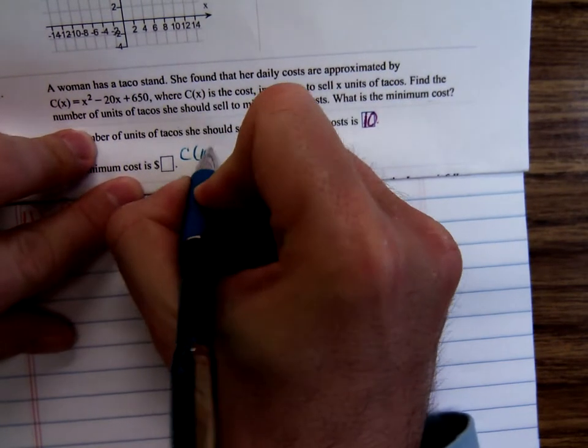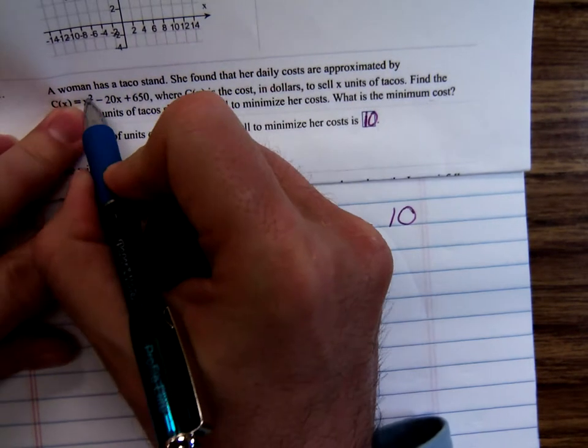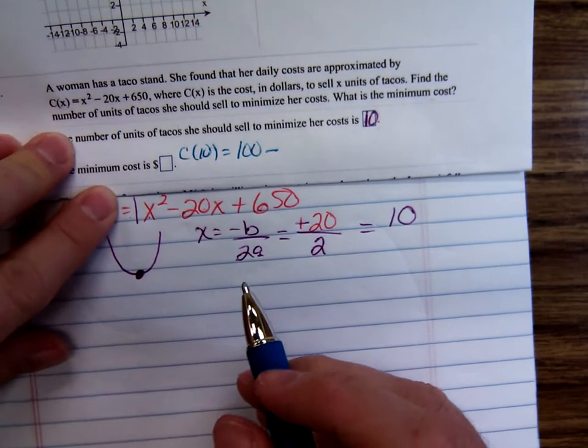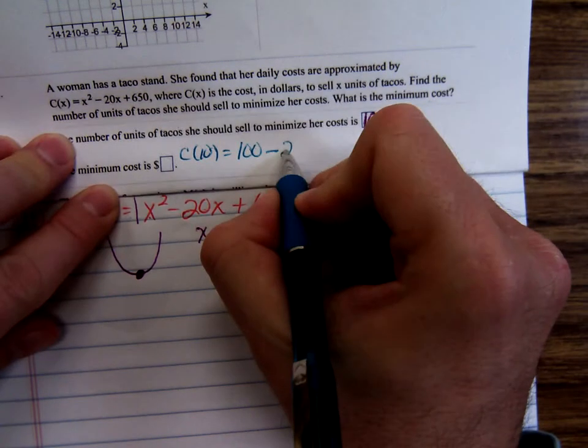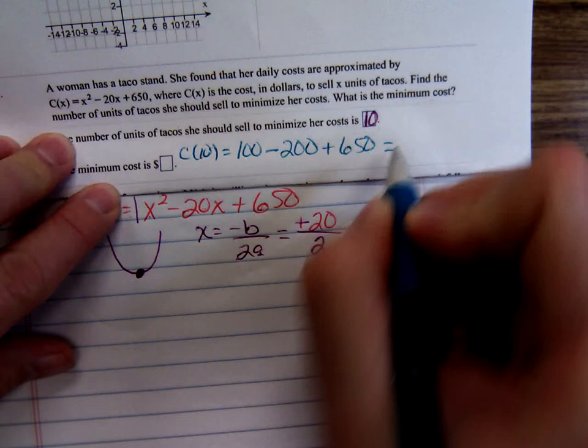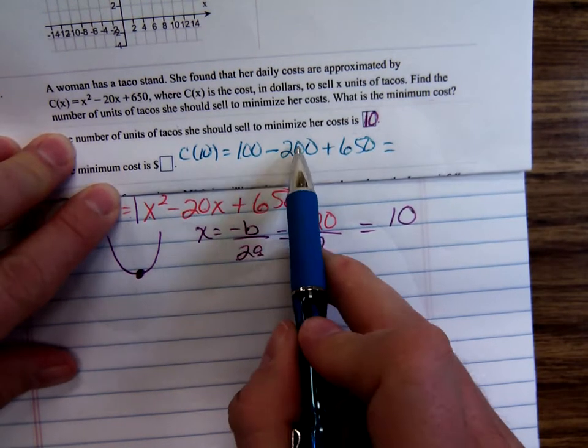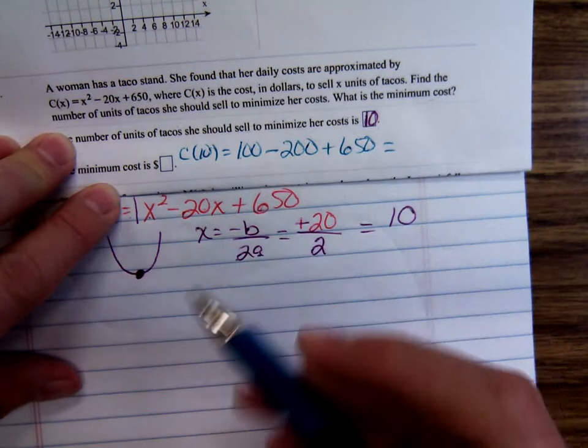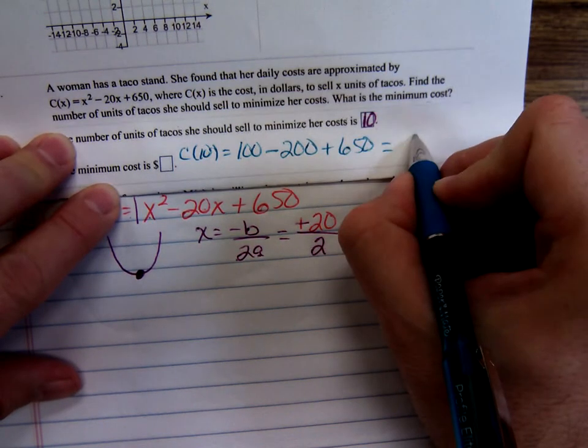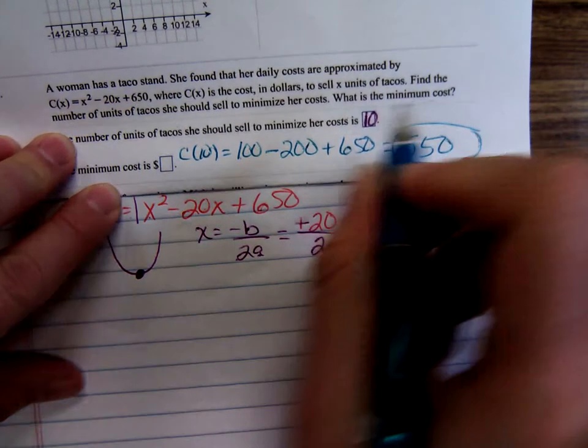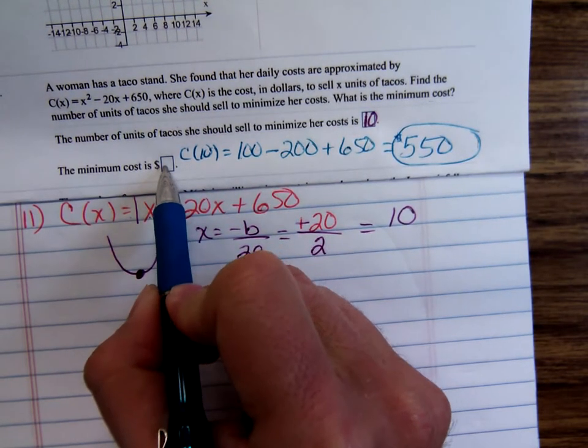So C(10) = 10² - 20(10) + 650. 10 squared is 100, minus 200, plus 650. So 100 minus 200 is negative 100. That's going to be 550.